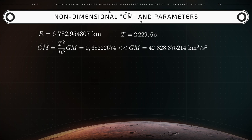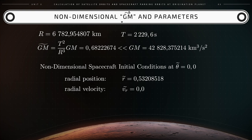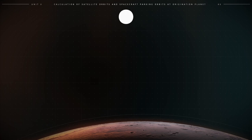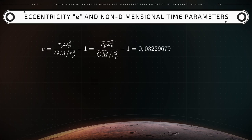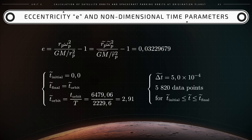As a result of this process, the non-dimensional initial conditions become the following ones: r̃ equals 0.5320 units, vr̃ equals 0, θ̃ equals 0, and ω̃ equals 2.9059 units. The total non-dimensional time for a complete orbit is then calculated as follows: t̃ for one orbit equals the ratio of the dimensional time for one orbit over the reference time capital T, which results in 2.91 units.